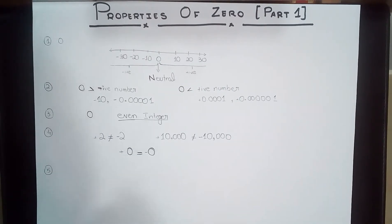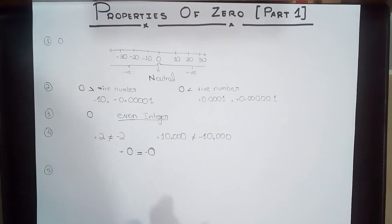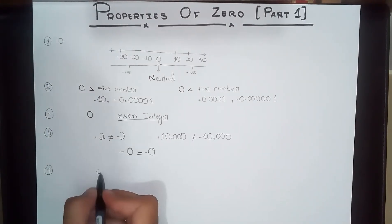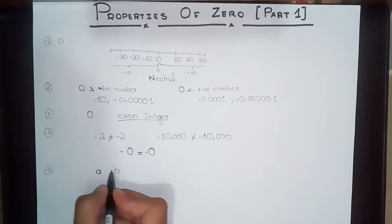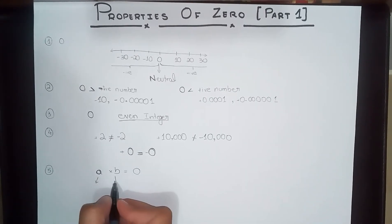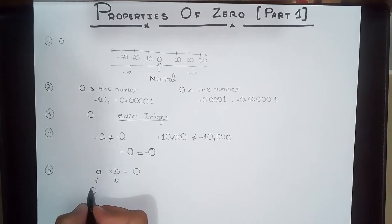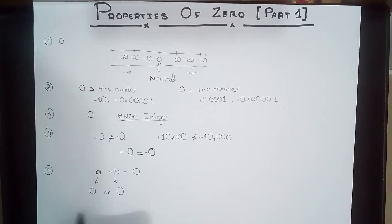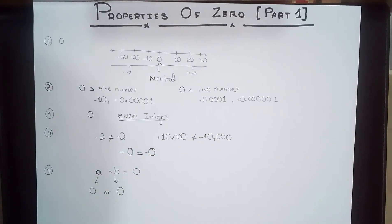The last property states that if the product of two numbers is zero, then at least one of them must be zero. So if a times b equals zero, then either a is zero or b is zero. If a is zero, then b can be anything and the answer will still be zero.